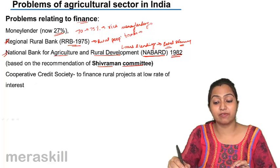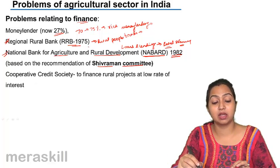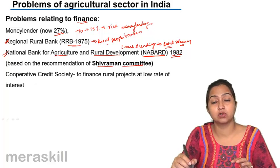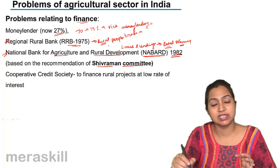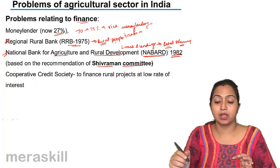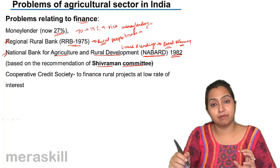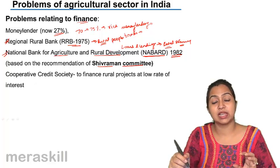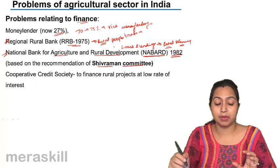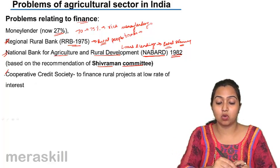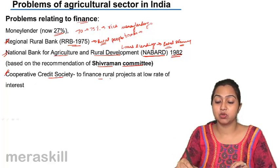RRBs — Regional Rural Banks — were set up to provide help to weaker rural people, people in small-scale industries, and people in farming. Similarly, cooperative credit societies were set up to finance rural projects at low rates of interest.